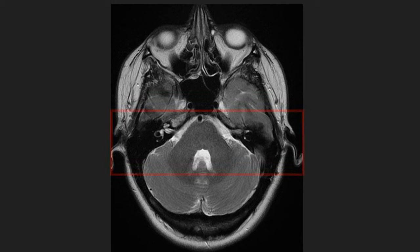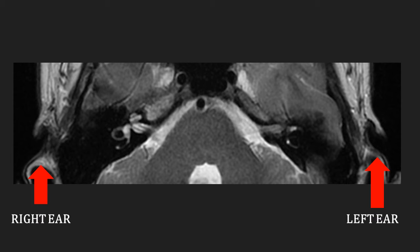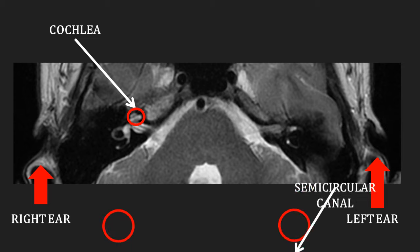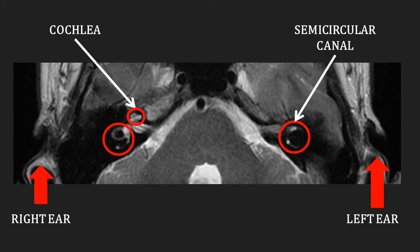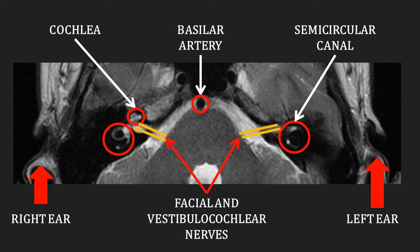On the next slide, we will focus on the structures around the brain stem and in the inner ear. On this snapshot, we can see the right and left ears. The small spiral-shaped object represents the cochlea. These crescent-shaped objects are the semicircular canals. The orange lines are paired structures emanating from the brain stem to these structures and represent the facial and vestibulocochlear nerves. And finally, anterior to the brain stem is the basilar artery.